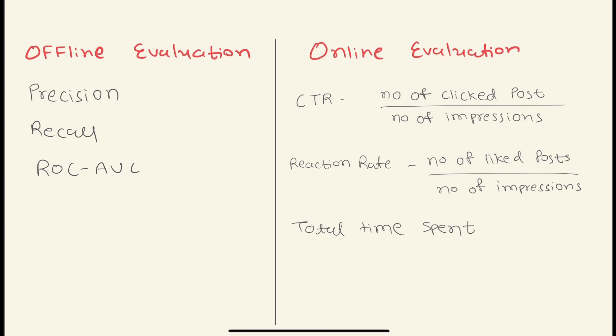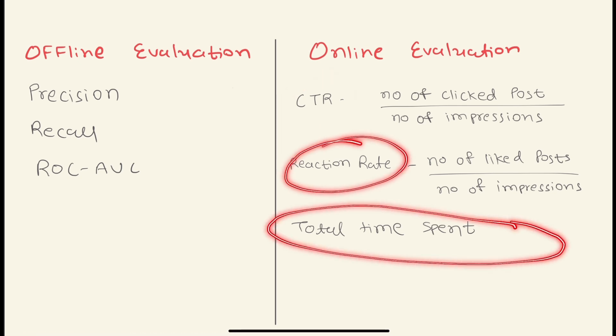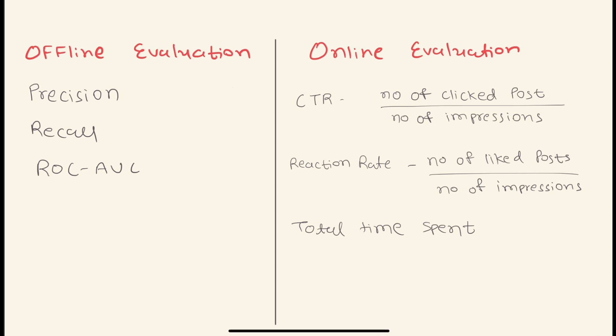In online evaluations, we can track three different metrics: one is click-through rate, reaction rate, and the total time spent on that particular post. This is a very high-level, very quick and fast overview of personalized newsfeed ML system design problem. You can go in this flow and discuss all these things.